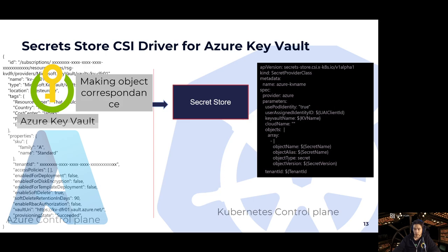Focusing on the architecture: there are two control planes — the Azure control plane, where the Azure Key Vault lives, and the Kubernetes control plane. To create a correspondence between them, we use the CSI Secret Store. You can see a YAML manifest on the screen; we'll go into those details shortly.